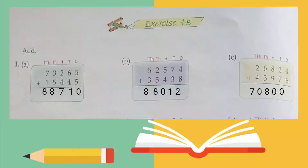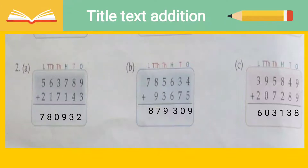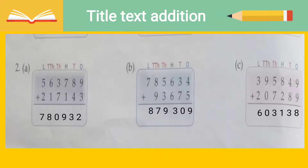The final answer for part C is 70,800. Moving on to question two, part A. Here we have digits up to lakh: ones, tens, hundreds, thousands, ten thousands, lakh. In the previous question we went up to ten thousands, but now here we are going to lakh, ten thousands, thousands, hundreds, tens, and ones.